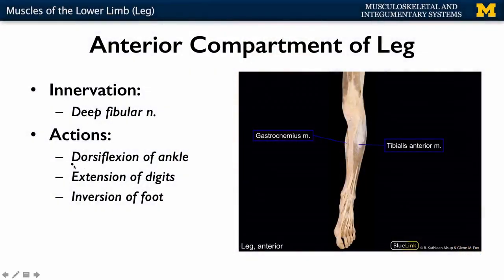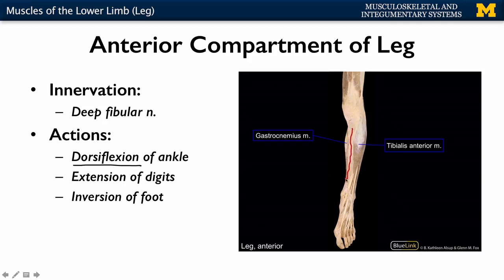There are three main muscles in this region. I won't have you memorize the specific muscles, but understand the actions that occur with their contraction. Importantly, you're going to have dorsiflexion of the ankle - toes pointing up - extension of the digits, and inversion of the foot. All of these anterior compartment muscles sit on the lateral side of the tibia, and the largest one is your tibialis anterior. Any muscle starting with 'tibialis' plays a role in inversion of the foot.